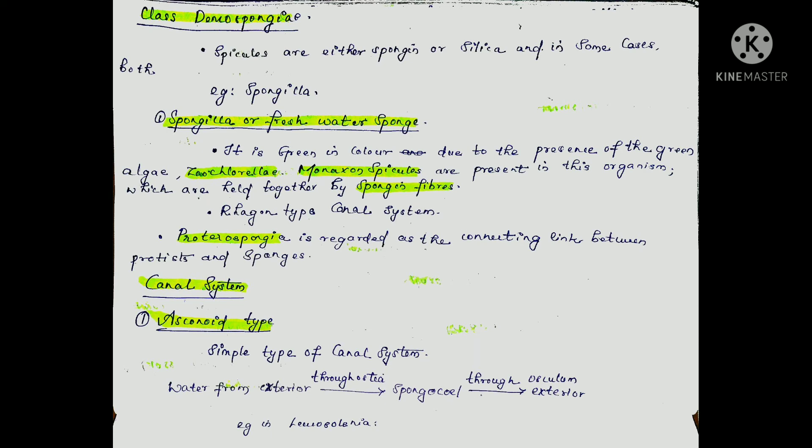The Ascon type is the simplest type of canal system. Water from the exterior moves directly through the ostia into the spongocoel and exits through the osculum to the exterior.